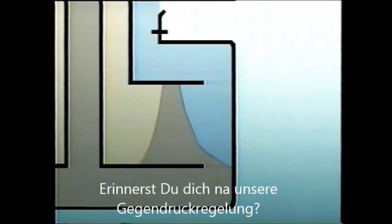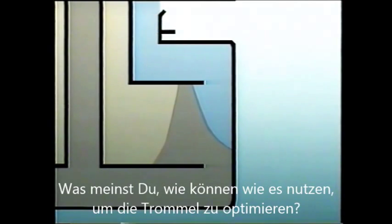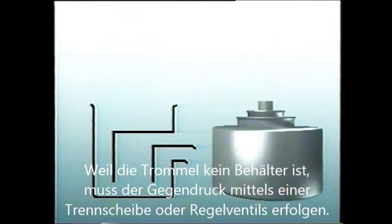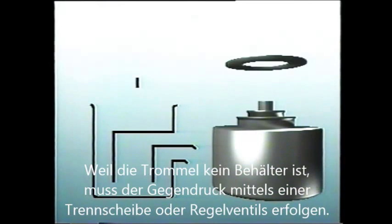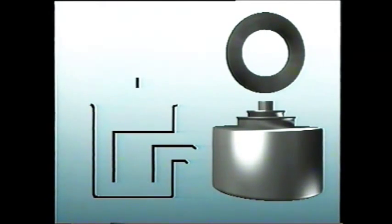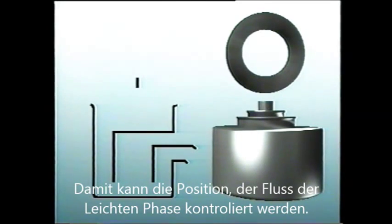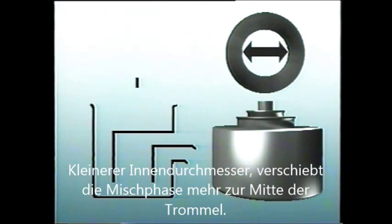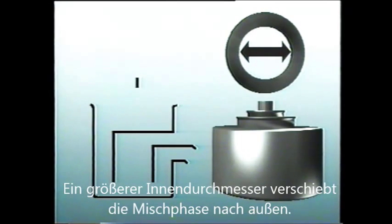How do I capture the loose lighter globules and control the interface, keeping it where we want it? Remember the dam or weir in our balanced column tank? Because the tank is now a bowl, the dam must become a ring. This is called a gravity disk — a sort of restricting ring by which we can control the position of the interface. A smaller inner diameter in the disk moves the interface towards the center; a larger inner diameter moves it outwards.